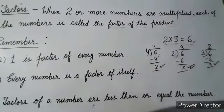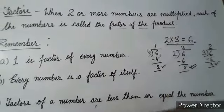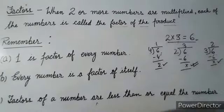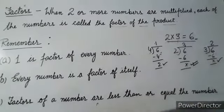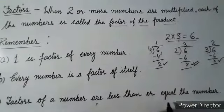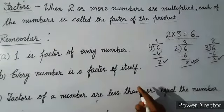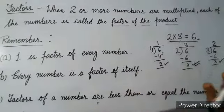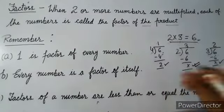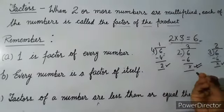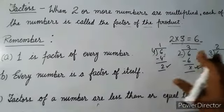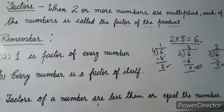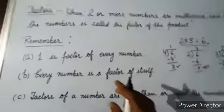One is also a factor of six because six comes in the table of one. And six is also a factor of six because six comes in its own table. You can understand this in any language or any different way, but the concept is the same.